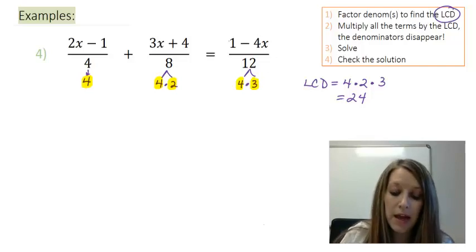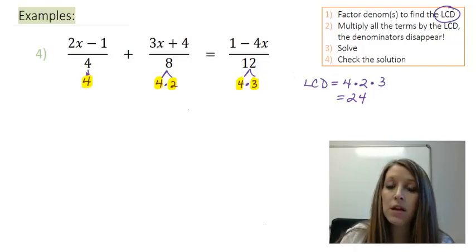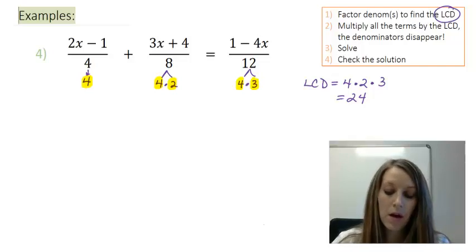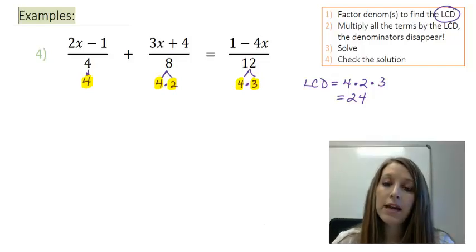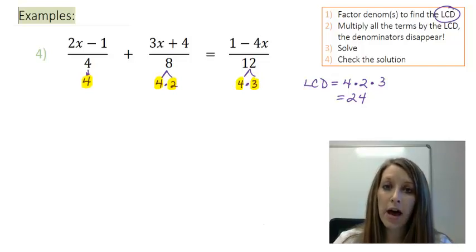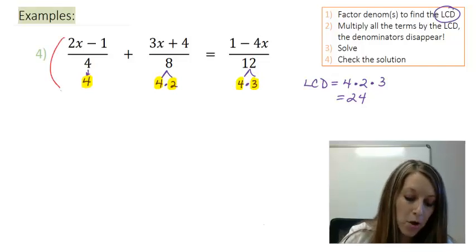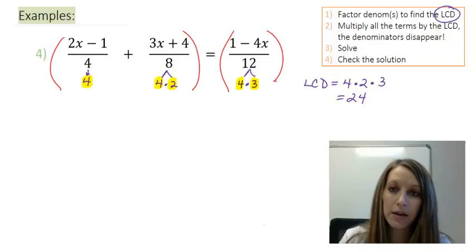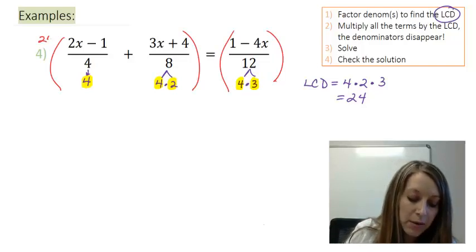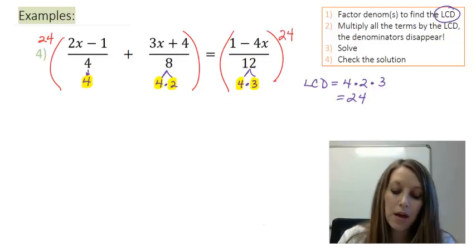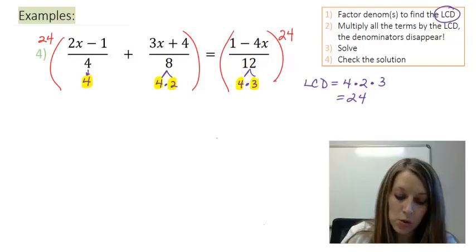Now this might have been able to pick out without factoring the denominators. But again I'm showing you this process here to help us with more complicated examples in the next set of videos. So what I need to do now is I need to multiply by my LCD and hope that all of these denominators cancel out. Now my properties of equality say that I multiply both sides of my equation by my LCD. So I multiply my left hand side by 24. And I multiply my right hand side by 24. Now the right hand side is easy to see. So let me just write that out.